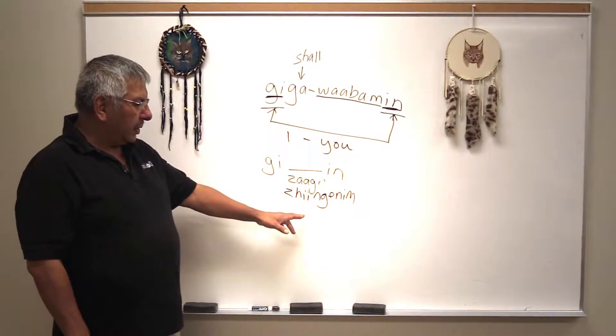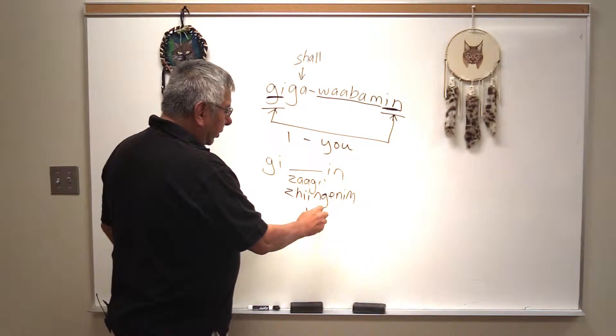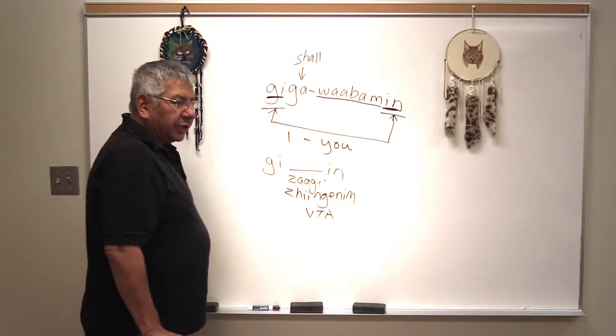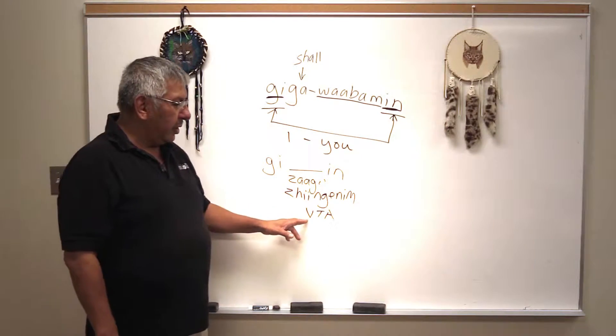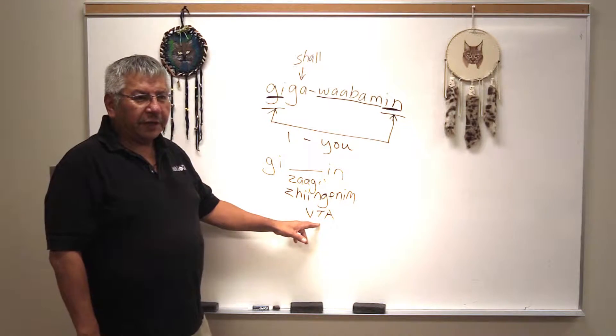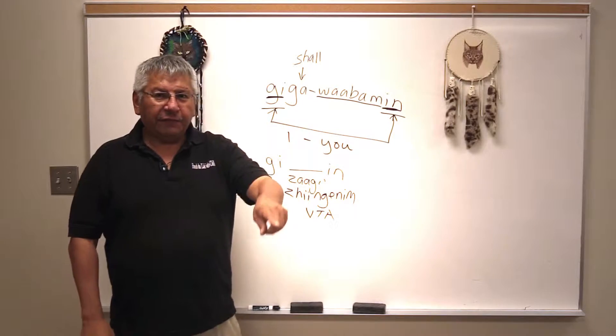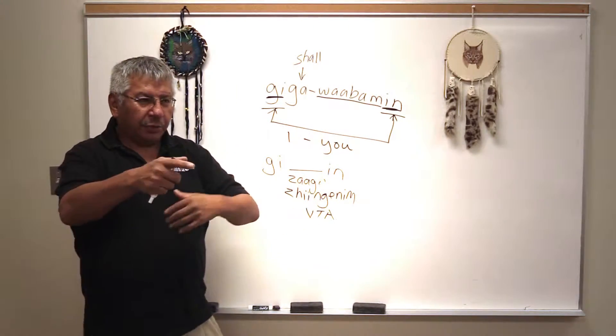So what I do is these types of verbs are in a verb classification called VTA. That just means that the verb you're using is an animate verb. The T means that it's transitive - it's happening between two people. I see you, I love you, I hate you, you see me, either way.